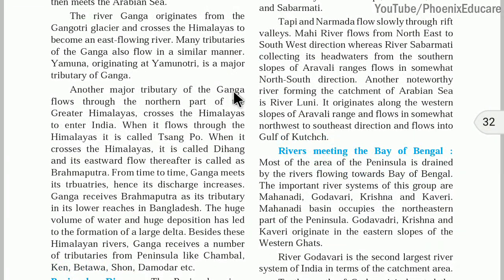Another major river is the Brahmaputra, which flows through the northern part of the greater Himalayas and enters India. While it flows through Tibet, it is called Sankpo — that is its Tibetan name. When it enters India through Arunachal Pradesh, it is called Dihang river. As it advances further into Assam, it is called Brahmaputra. So Brahmaputra river has three names: Sankpo in Tibet, Dihang in Arunachal Pradesh, and Brahmaputra thereafter.